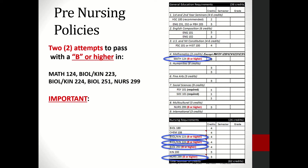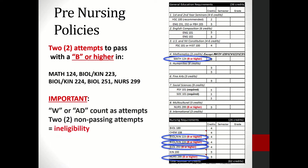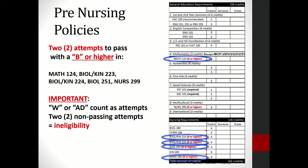It is important to note that a withdrawal or audit of a course counts as an attempt. If you have two penalty attempts — which include a withdrawal, audit, or grade of B minus or lower — you will be ineligible to apply to the full program.